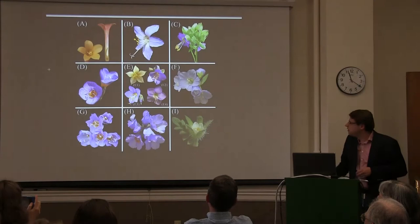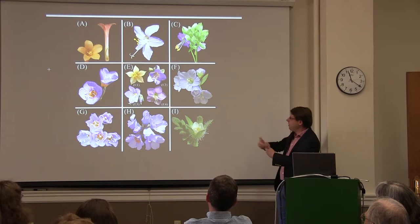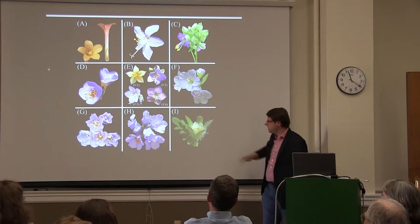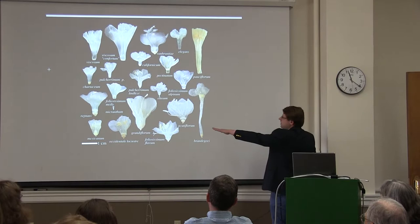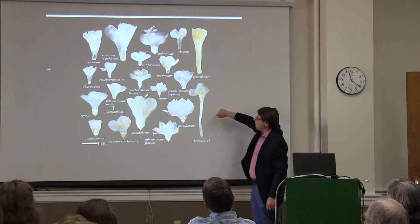This is the floral diversity of Polemonium — fairly similar, all bee pollinated, blue flowers. In the upper left we do have a hummingbird pollinated species, and it appears with annual self-pollinating species. The similarity in floral form is further emphasized here — these are all to scale, more or less the same size. You have the hummingbird and hawkmoth pollinated ones over here, but most of the species diversity is this general campanulate blue flower.